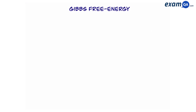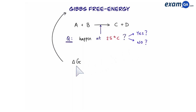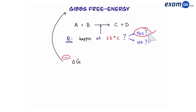Welcome. In this video we're going to be learning about Gibbs free energy. So let's say we have this reaction: A plus B makes C and D. We want to know if this reaction will happen at 25 degrees Celsius. We have two options — it either will happen or it won't. But to get to the answer, we have to work out delta G. The G stands for Gibbs free energy. If the value for delta G is negative, that means the reaction will happen. Another word for saying it will happen is to say it is feasible or spontaneous.